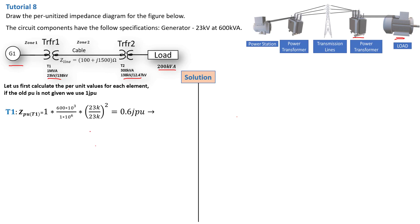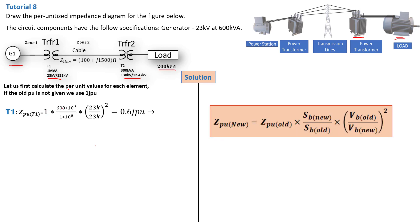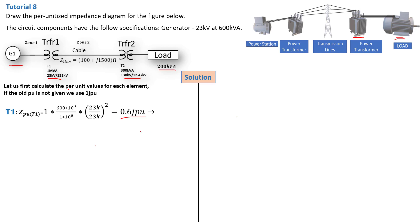For transformer one, we replace into the formula using 1 as the old per unit. The SB new — the new base apparent power — is 600 kilovolt ampere, and the old apparent power is 1 MVA. VB old is 23 kilovolt, which is the voltage at the primary of the transformer, and VB new — the voltage coming from the generator — is also 23 kilovolt. Calculating on the calculator gives us 0.6 per unit as the new per unit of our transformer.